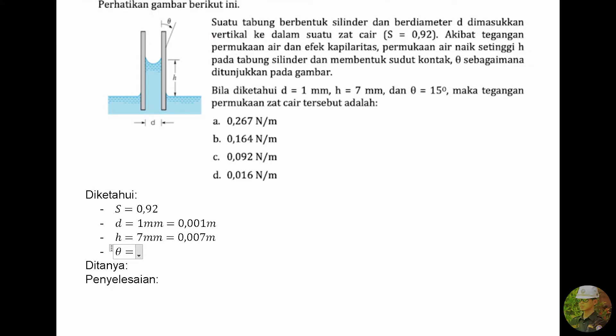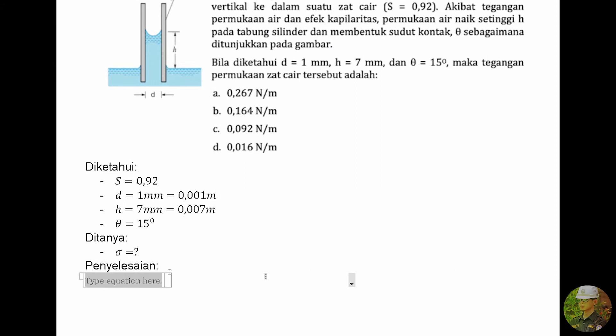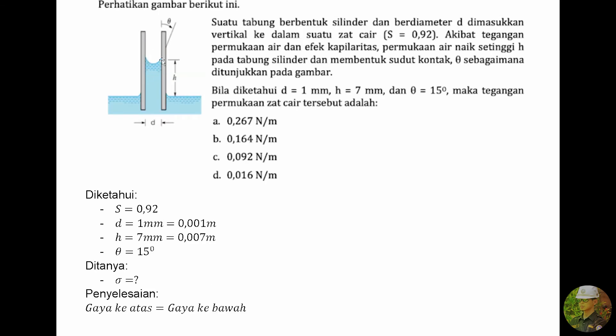Yang ditanya adalah berapa tegangan permukaan. Kita akan selesaikan soal ini. Yang perlu diketahui adalah dalam keadaan setimbang, gaya ke atas itu sama dengan gaya ke bawah. Gaya ke atas dipengaruhi oleh apa saja? Yang pertama adalah tegangan permukaan yang bekerja pada sekeliling diameter perimeter ini.